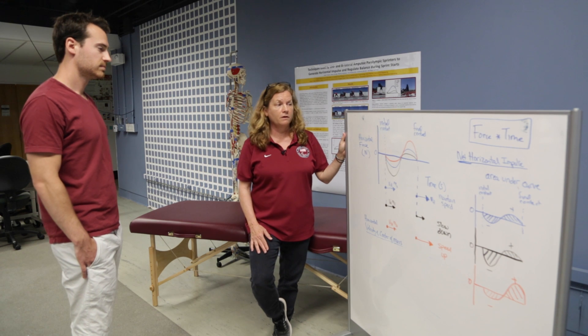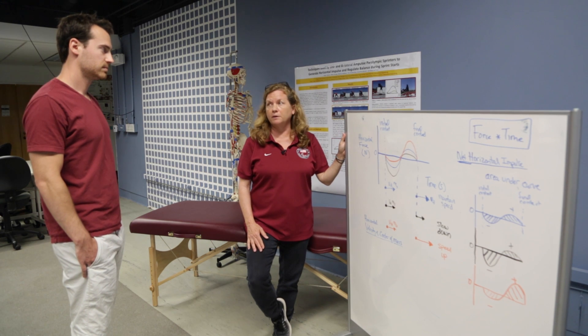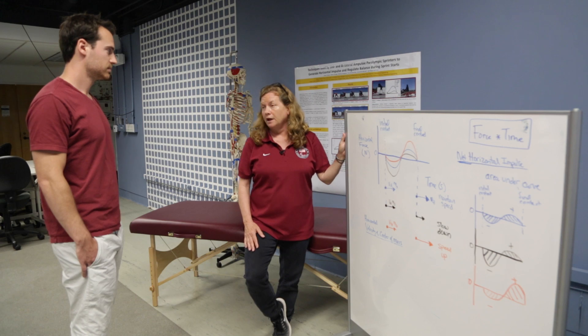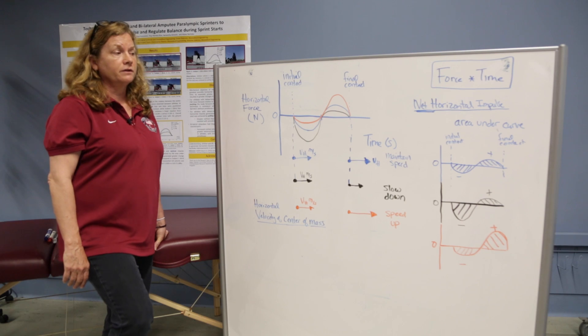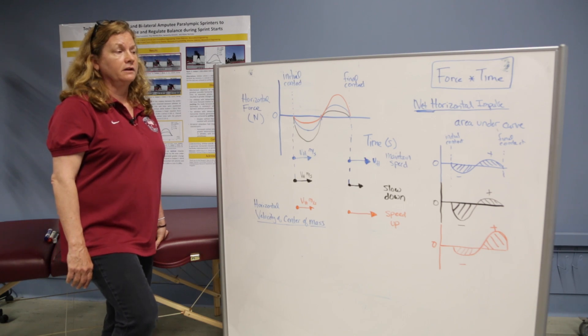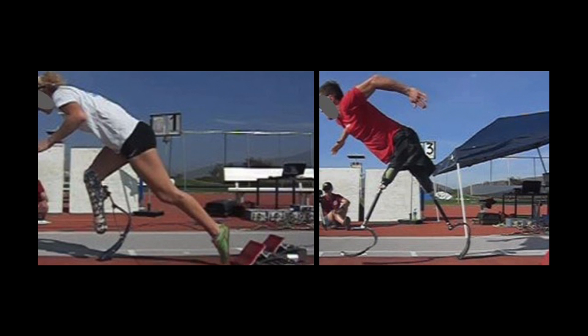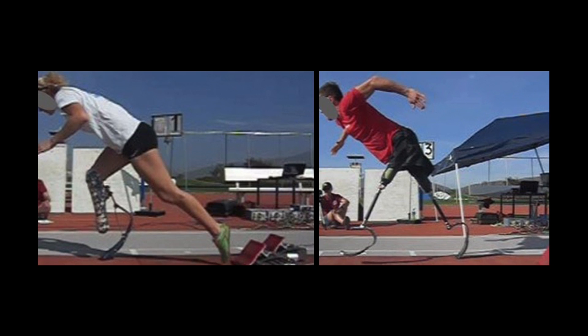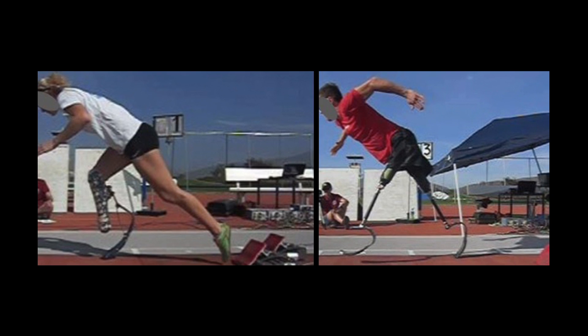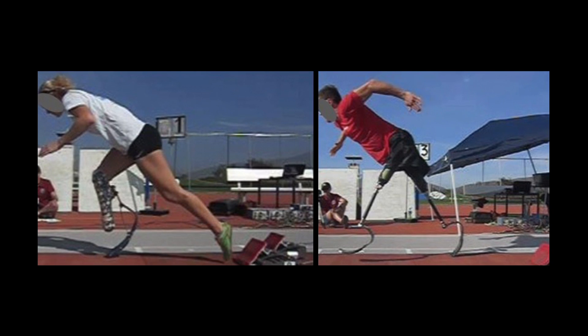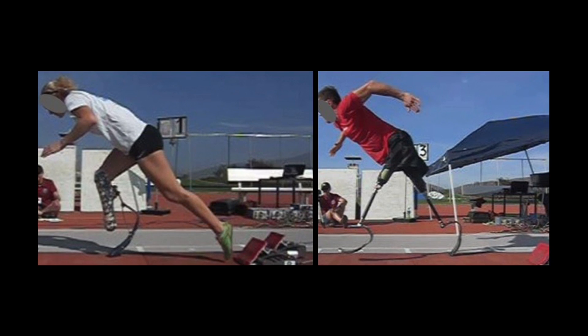Some of the things we've been doing over the last quadrennium is working with USA Track and Field, focusing on the horizontal jumps in particular and also sprint starts with the Paralympians. One of the key aspects we're looking at is how they generate speed and how they use speed in their events.